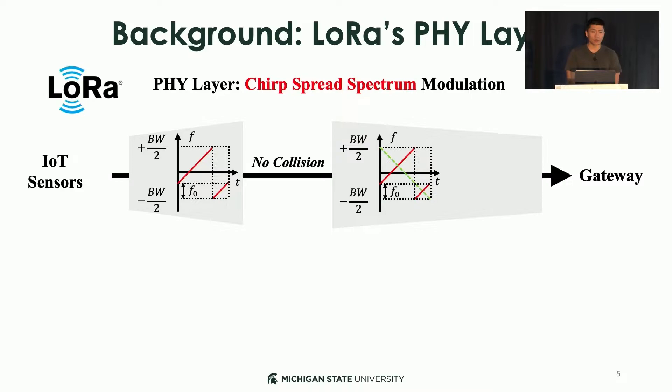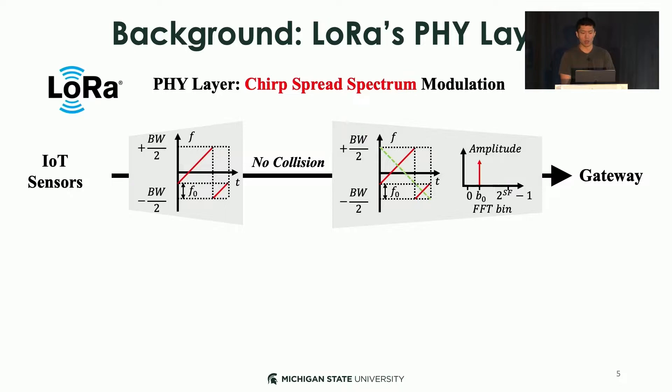In the case of no collision, everything works well. We encode the data at the transmitter side into the initial frequency of the targeting chirp symbol — the red one. We use the first symbol, say F0, to detect the energy peak on the spectrum, which is B0, corresponding to the encoded initial frequency F0 at the transmitter side.